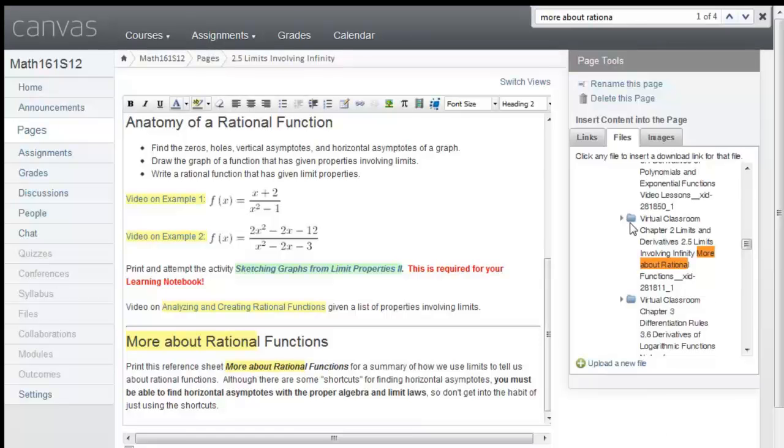Now I need to find the specific file. Before I do that, I'm going to actually highlight the words More About Rational Functions, because when I find the file, it's going to do the automatic linking when I click on it. I'm going to open up this folder and look for a PDF document, which is how I saved my files, and click on that.